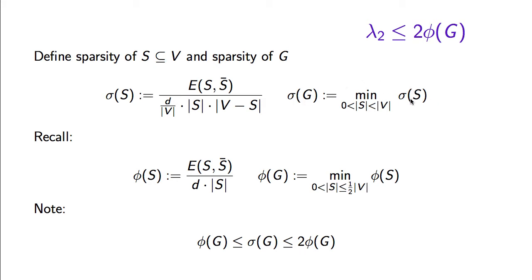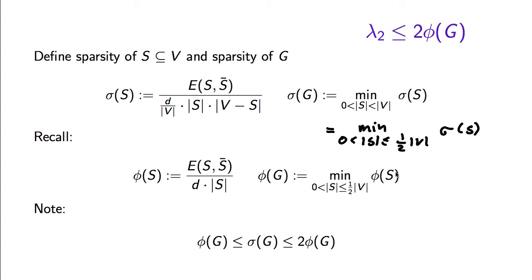Since the sparsity of S and the sparsity of V minus S are the same, the minimization over sparsity will not change if we just minimize over sets of vertices whose size is at most half of the total number of vertices. If we compare the cost function in the case of σ (sparsity) and in the case of φ (expansion), they differ by |V minus S| divided by |V|, which for S less than half the number of vertices is a factor between half and one, giving us this inequality. Now since the expansion is at most the sparsity, which is at most twice the expansion, to prove that λ₂ is at most twice the expansion, it is enough to prove that λ₂ is at most the sparsity of the graph.